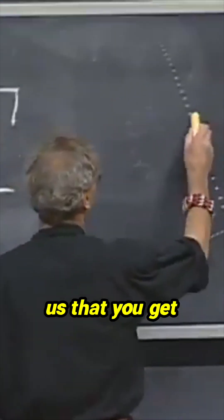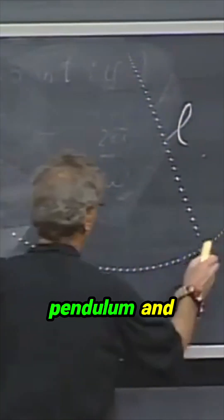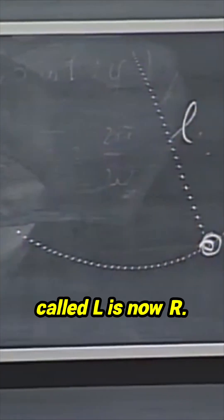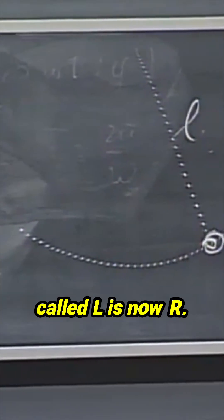So it shouldn't surprise us that you get exactly the same period that you had with the pendulum, except that, of course, with the pendulum what we called L is now R.